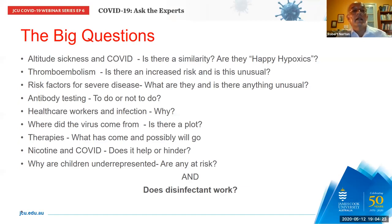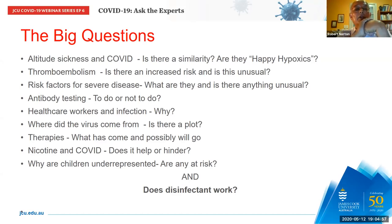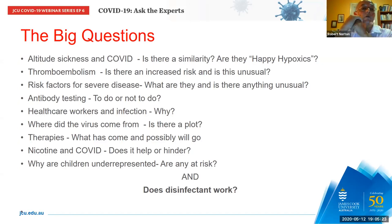Moving on to thromboembolism — is there an increased risk? The answer is yes, certainly in aspects of this disease, but it's not unusual; it's seen with a lot of other conditions as well. What happens is you get activation of pathways fairly common to multiple viral diseases. One example would be hemorrhagic fevers such as Ebola — you get activation of tissue factor which leads to DIC. Here it's somewhat similar but you get more of a thrombotic event. The difference between DIC and thromboembolism is part of a spectrum which can go one way or the other.